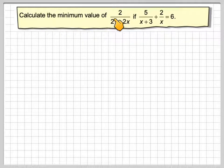Calculate the minimum value of 2 divided by 21 minus 2x if 5 over x plus 3 plus 2 over x is equal to 6.